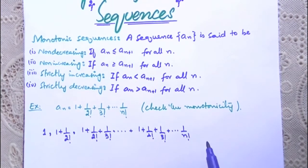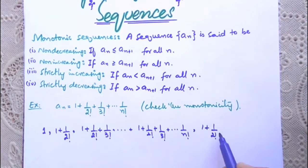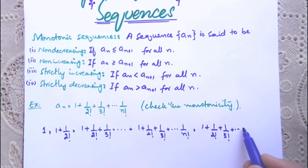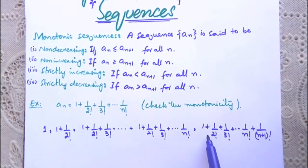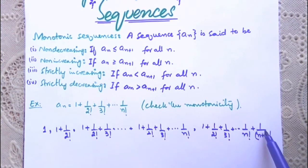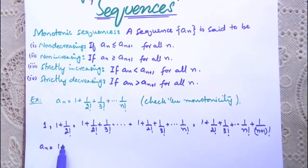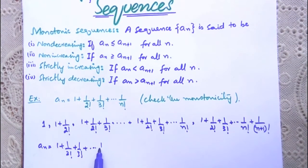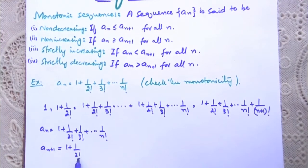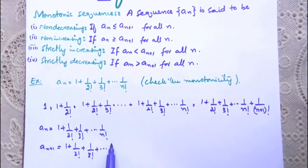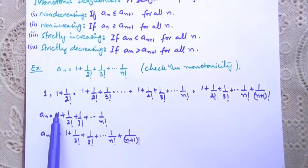So a_n = 1 + 1/2! + 1/3! + ... + 1/n!. And a_{n+1}, the (n+1)th term, is: 1 + 1/2! + 1/3! + ... + 1/n! + 1/(n+1)!.